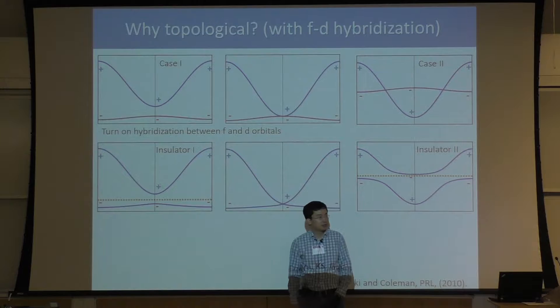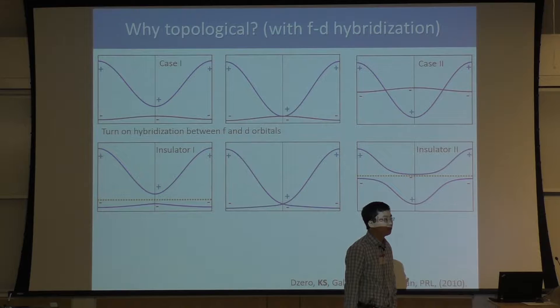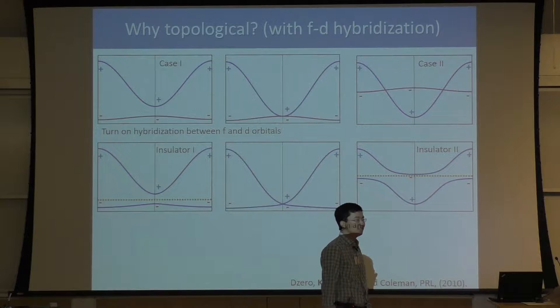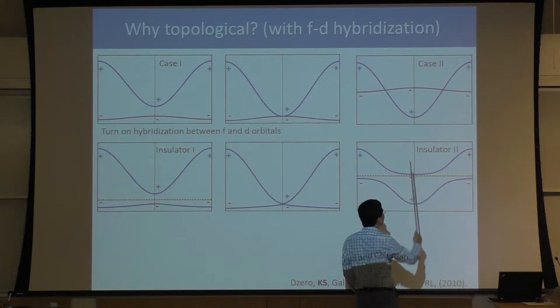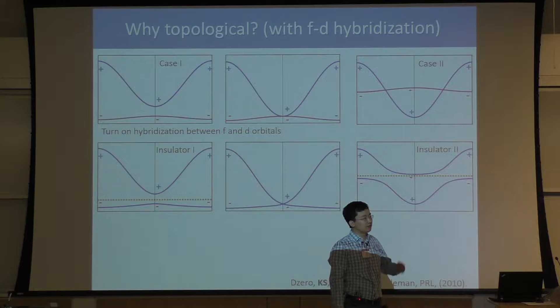So the difference here is that the localized moments are also involved. I introduce hybridization between the localized electron and the conducting electron. The dashed line is the Fermi energy. For the top figure, I assume the localized electron and the conducting electron really don't talk to each other.